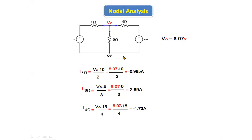To find the current through the 4 ohm resistor: i3 = (Va − 15)/4 = (8.07 − 15)/4 = −1.73 amperes. Like this we find the current passing through each and every resistor using nodal analysis.